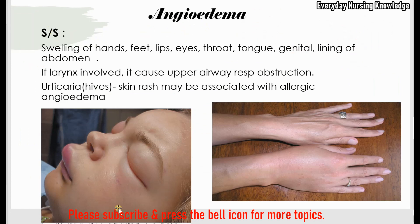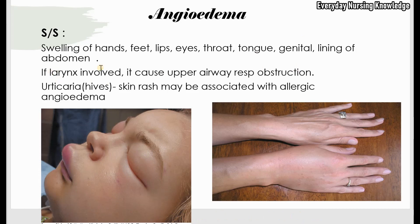The primary symptom of angioedema is swelling, which can happen anywhere in the body — hands, feet, lips, eyes, throat, tongue, genitals, or the abdominal lining. If the abdominal lining is involved, the patient may have nausea, pain, vomiting, or diarrhea. If the throat or larynx is involved, it can cause upper airway obstruction with shortness of breath — this is a medical emergency that can lead to death and requires immediate medical intervention.